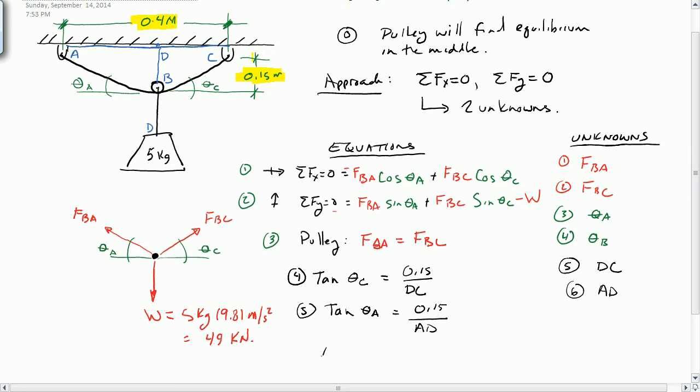So let's look for another relationship from the geometry. How about AD plus AC has to equal 0.4 meters. There's a sixth equation and six unknowns. So at this point, I know I can solve the system of equations. I have six unknowns and six equations. And it just becomes a matter of algebra.